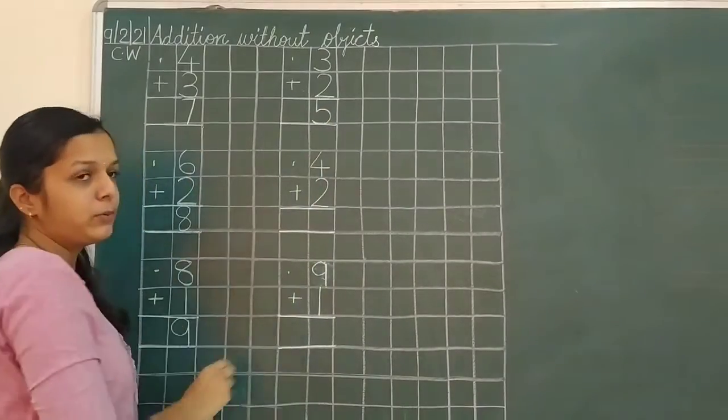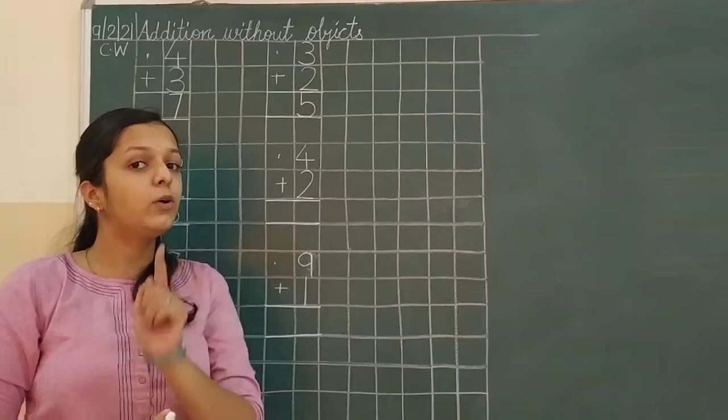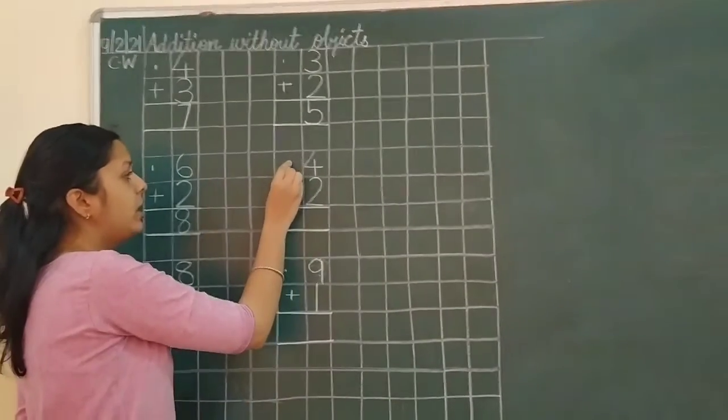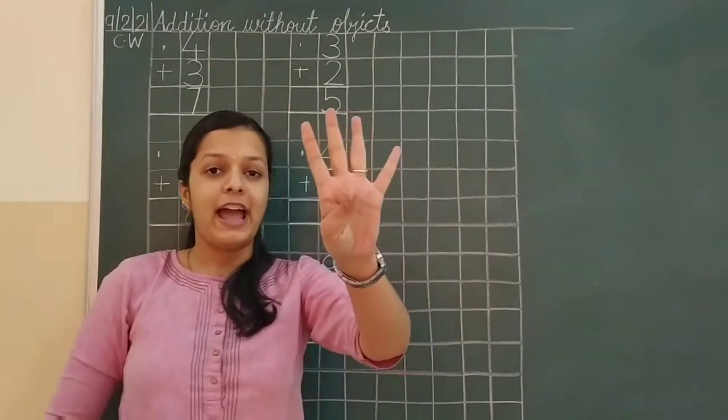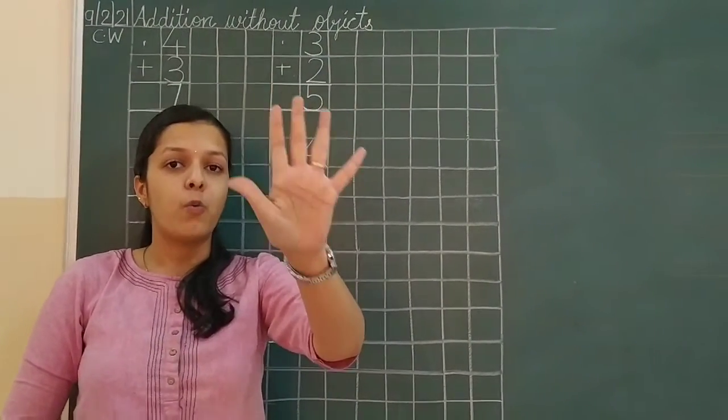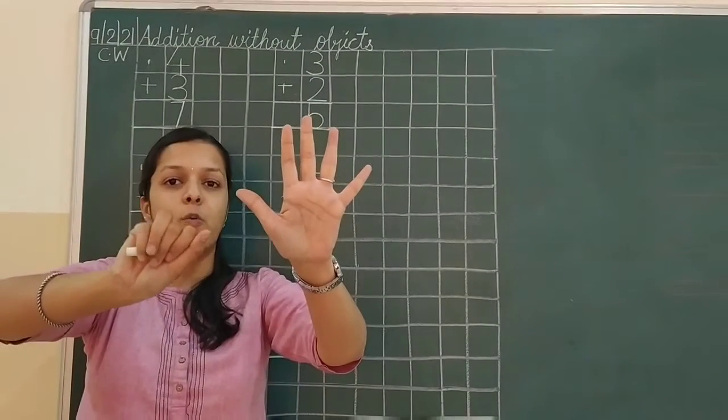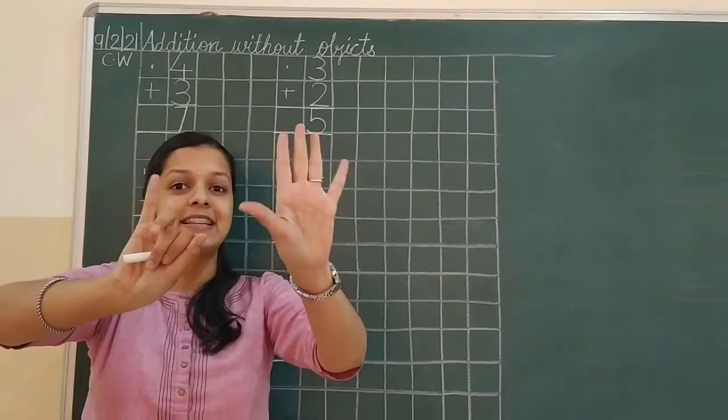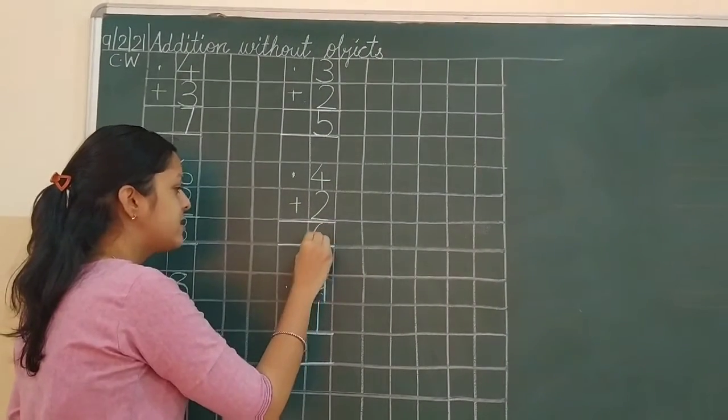Leave a line in between. See how I have written. I want your notebooks in this way only. Okay? 4 plus 2. Put a dot. 4 plus 2. And 2 lines. 4. And when we add 2. 1, 2. How many? 6. 1, 2, 3, 4, 5, 6. 6 number. So, we are going to write here 6.